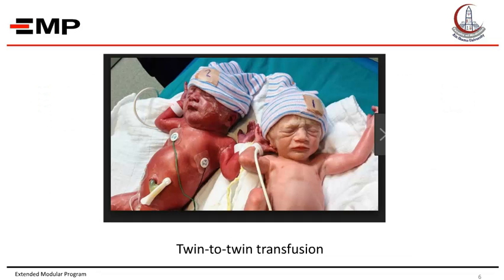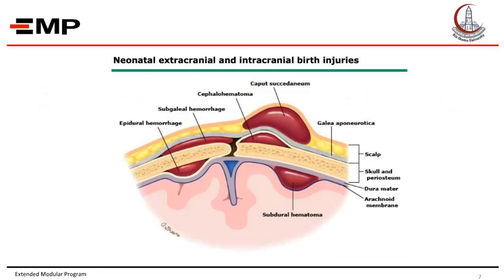This picture shows twin-twin transfusion, where one twin is plethoric while the other is pale. This figure shows the neonatal extracranial and intracranial birth injuries. Caput succedaneum is a superficial swelling, extra-periosteal, occurring over the presenting part during delivery; the edema may cross the suture line and sometimes bleeding might occur inside. Cephalohematoma is hemorrhage under the periosteum of the skull — it is subperiosteal, does not cross the suture line, is usually firm and unilateral in 85% of cases, and resolves in 2 to 12 weeks.